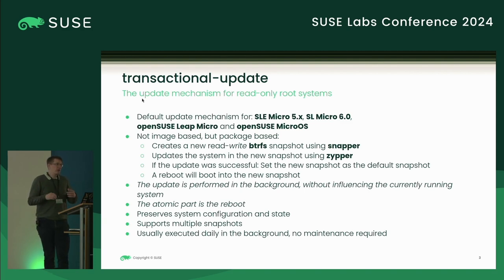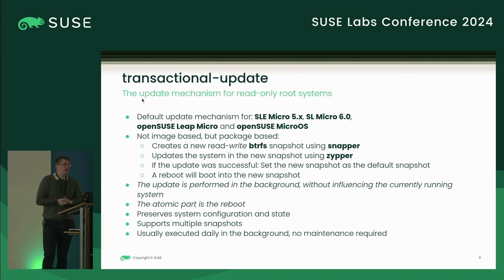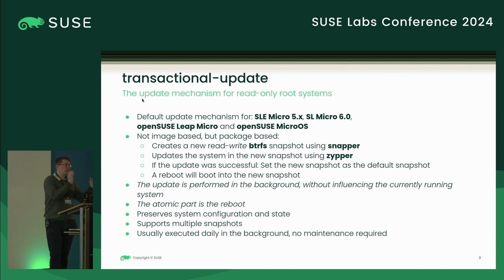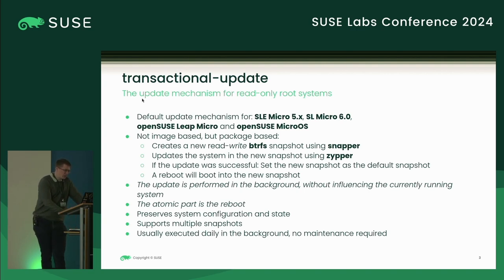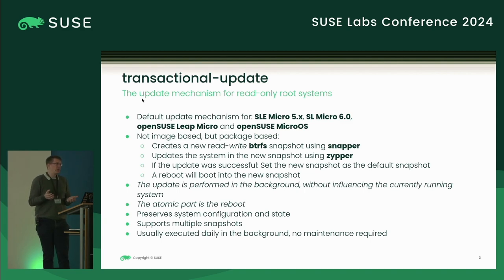One of the advantages of RPM-based updates is that you keep your existing state — your system configuration, all your files in the var directory, databases, or whatever you store there — and we have support for multiple snapshots. Compare that to other read-only distributions, which usually use an A-B partitioning mechanism where if one partition breaks you only have one other to fall back on. The goal of all those systems is a self-maintaining system: you install it and it just keeps updating itself.